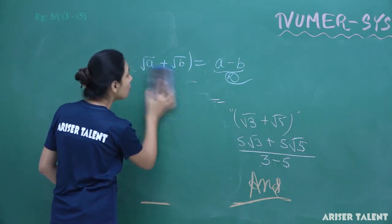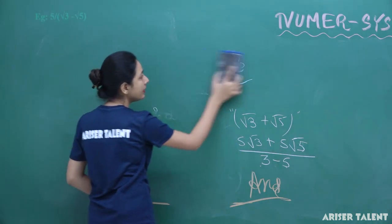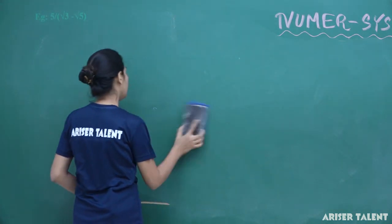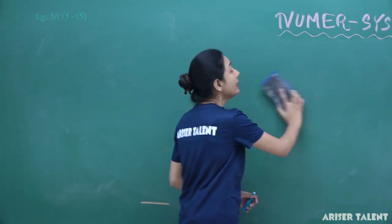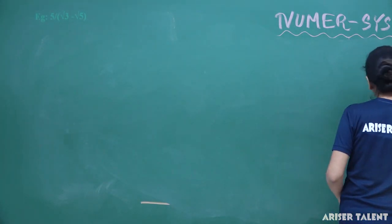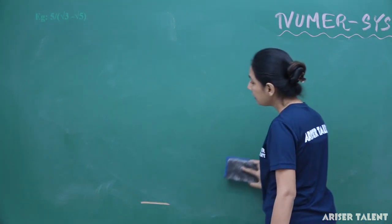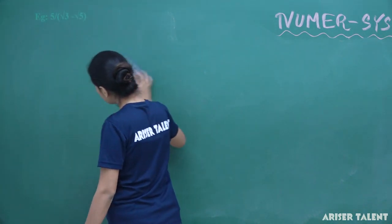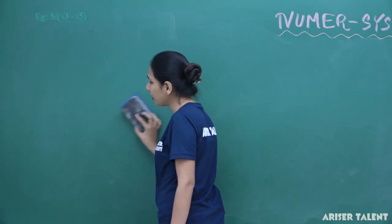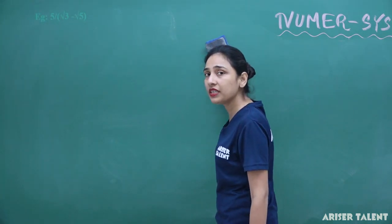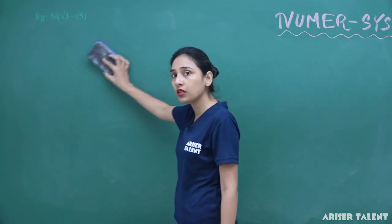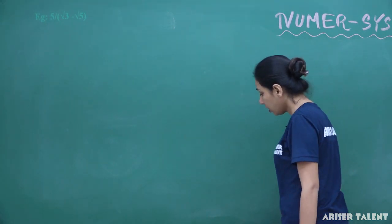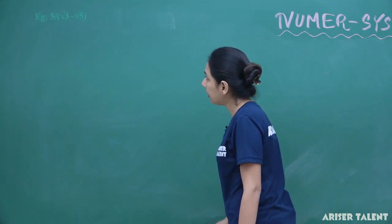You are getting how we use identities here. These identities are basically the extended versions of a plus b whole square, (a+b)(a−b), and a squared minus b squared kinds of formulas. This is all about that.